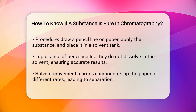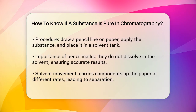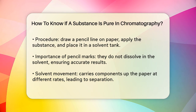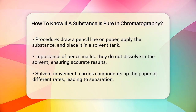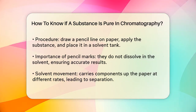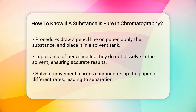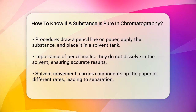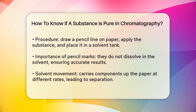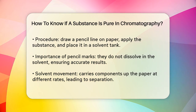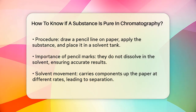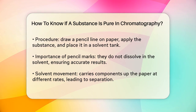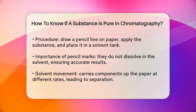Here's how it works. You draw a line near the bottom of a piece of paper with a pencil, because pencil marks won't dissolve in the solvent. Then you place a small amount of the substance you want to test on this line. Next, you put the paper in a tank with a solvent, making sure the solvent doesn't touch the substance directly. As the solvent moves up the paper, it carries the different components of the substance with it. These components will move at different rates, separating out into distinct spots.